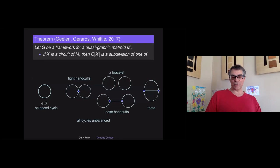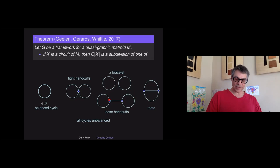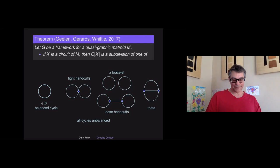If you've got a circuit in your matroid and you want to know what it looks like in your framework, either it's a balanced cycle or it's one of these subdivisions. A pair of unbalanced cycles that meet in exactly one vertex are tight handcuffs; a pair of vertex-disjoint unbalanced cycles with a minimal path between them are loose handcuffs; a pair of vertex-disjoint unbalanced cycles that form a bracelet; and then there are thetas. A circuit of a quasi-graphic matroid appears as one of these subgraphs in your framework. The collection B of balanced cycles sorts out which cycles are circuits and which are independent. We need to also sort out which bracelets are circuits and which are independent.